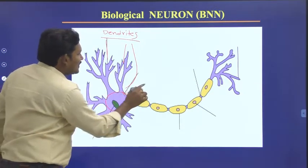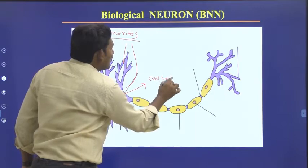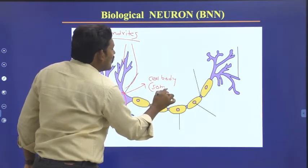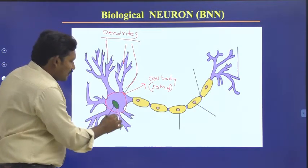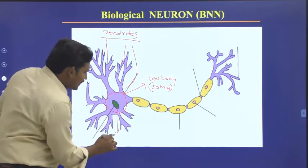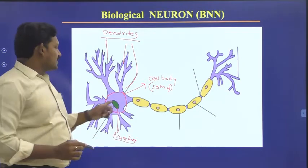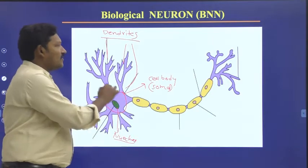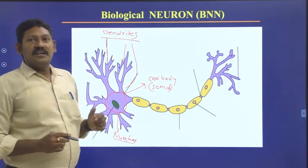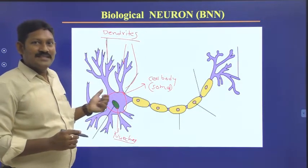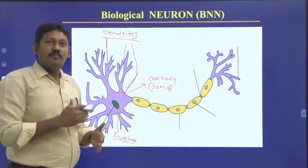This is called as cell body. The cell body can also be called as soma. Inside the cell body we have the nucleus. These dendrites will collect the input and send that input to the cell body, which will process that input.